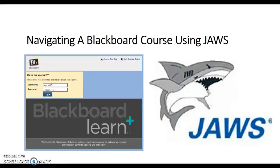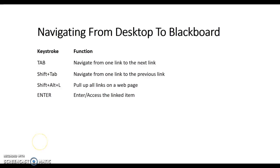In this video tutorial, I am going to demonstrate how a student can navigate a Blackboard course site using the JAWS screen reader. First, I will be demonstrating how to get from the desktop location into the desired Blackboard class. The keystrokes used for this part include Tab, Shift-Tab, Shift-Alt-L, and Enter.